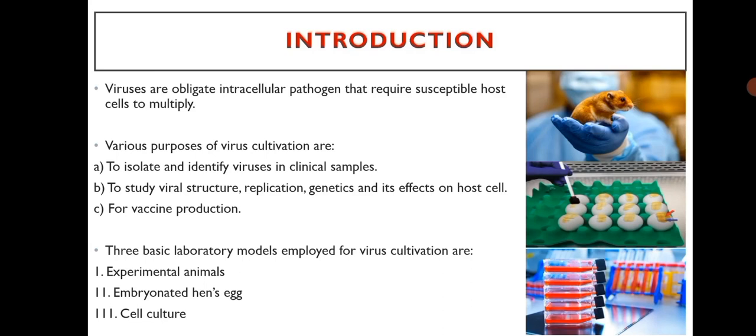Three basic laboratory models employed for virus cultivation are: 1. Experimental animals, 2. Embryonated hen's egg, and 3. Cell culture.